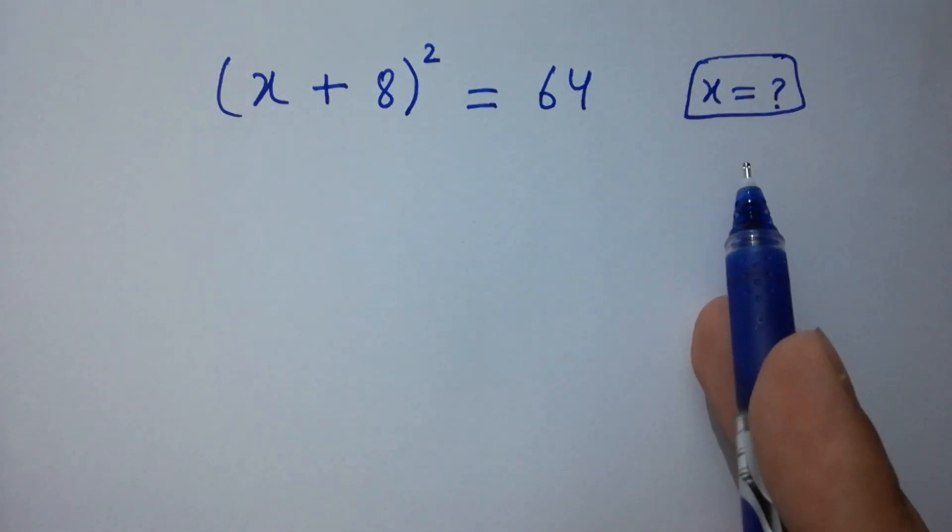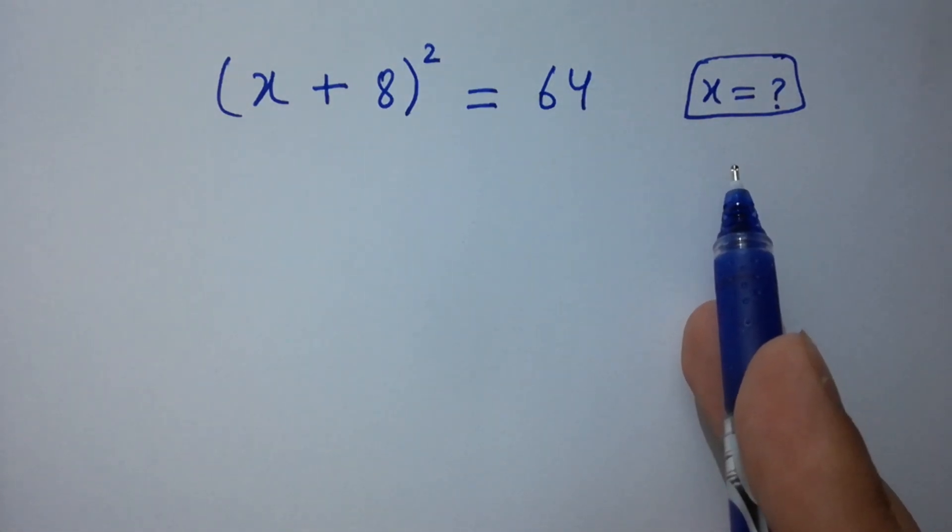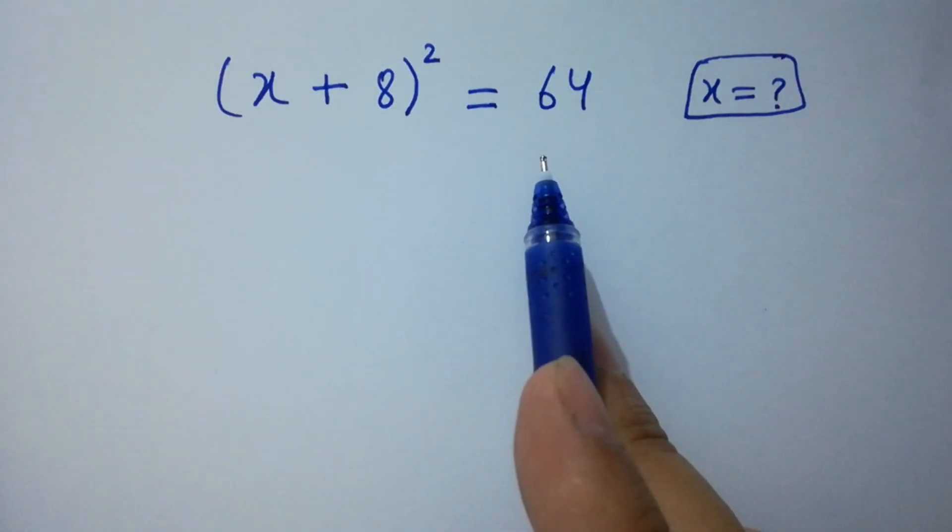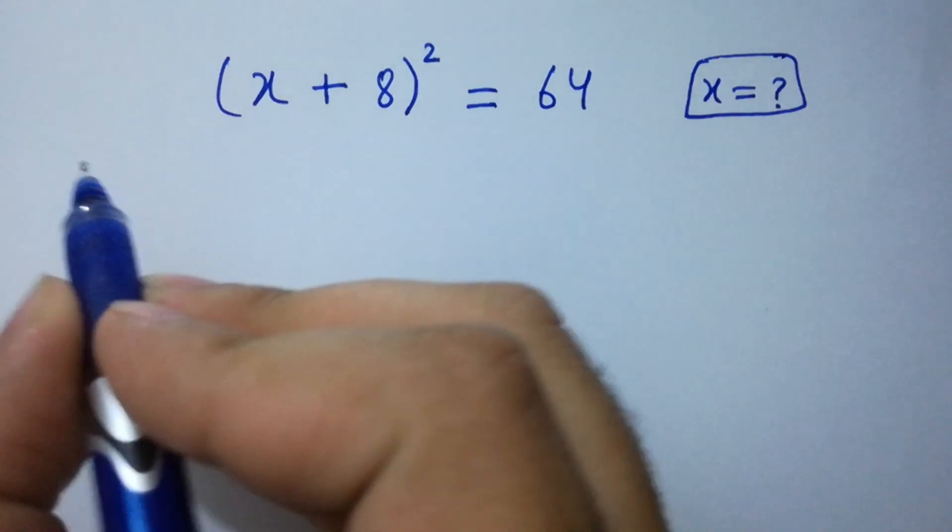Hello friends, find the value of x if (x + 8)² = 64. Let's have a solution.